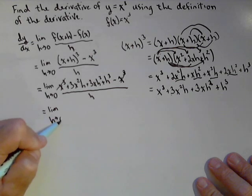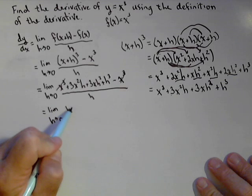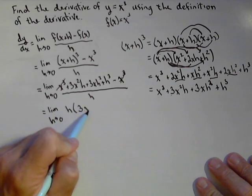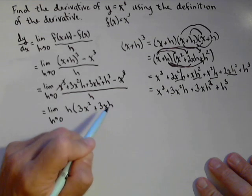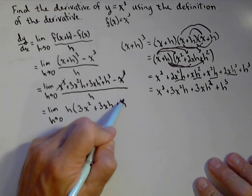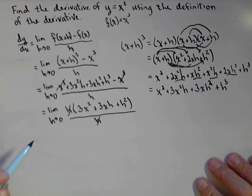So what I'm going to do is in the numerator, factor one h out of these three terms. That gives me h times three x squared plus three xh plus h squared, all over h. And there is my cancel.